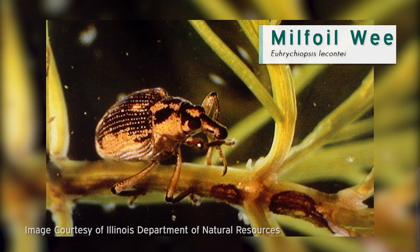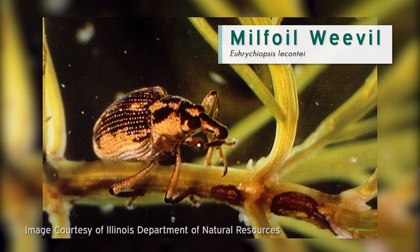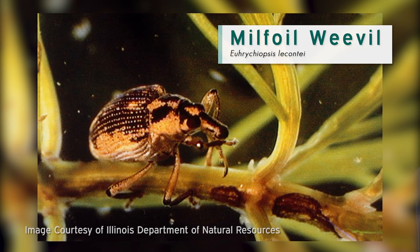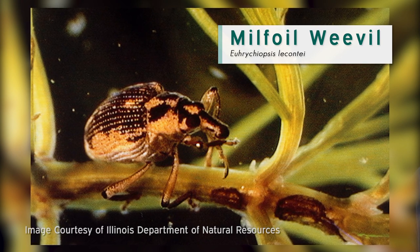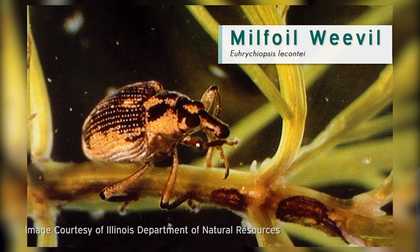Another thing we looked into was biological control. There's a weevil — a native species — that feeds upon the EWM. The problem is it doesn't winter over very well, fish eat these weevils, and it becomes very expensive to keep restocking them. All of the studies have apparently been inconclusive. So where there's hope that there would be a biological control, it right now doesn't seem to be on the horizon.